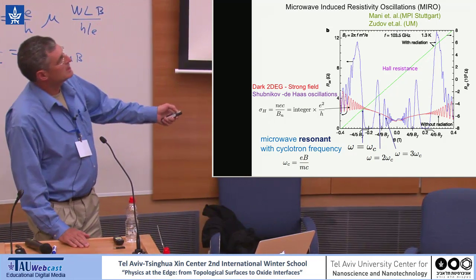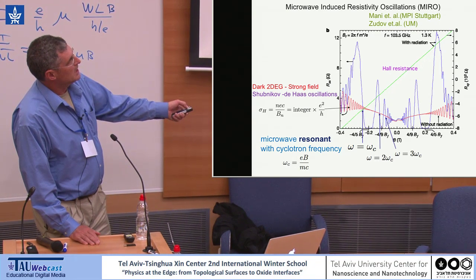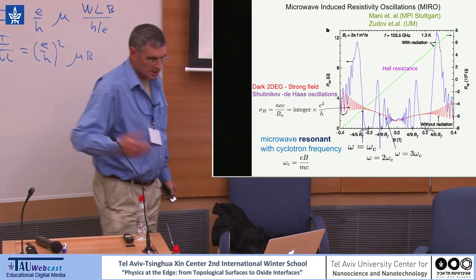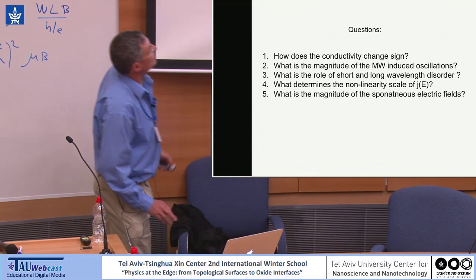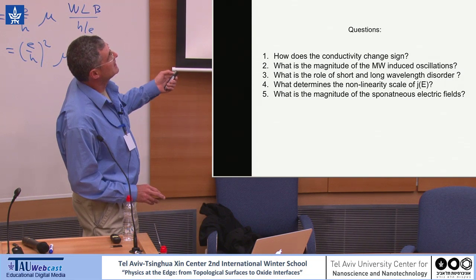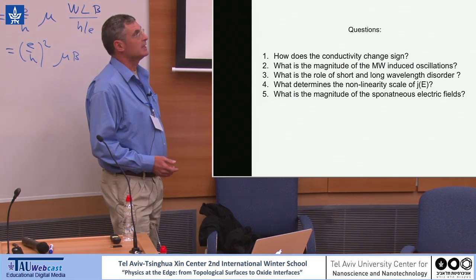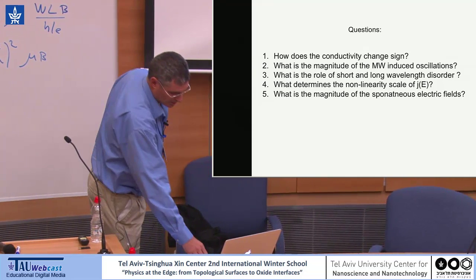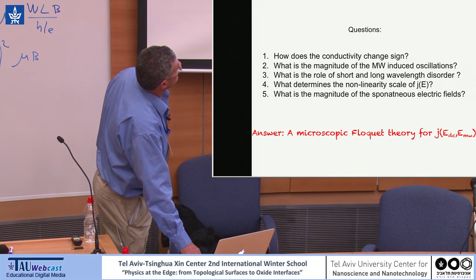The question is how to describe this. What is the size of these oscillations? The system also shows flat regions that look like zero conductance or zero resistance. The key questions are: why does the conductivity change sign, what is the magnitude of the microwave-induced oscillations, and what does disorder have to do with everything? Obviously to get R_xx non-zero you need to treat disorder, because without disorder R_xx and sigma_xx are zero. You need a microscopic theory, and the Floquet transformation is very useful for that.